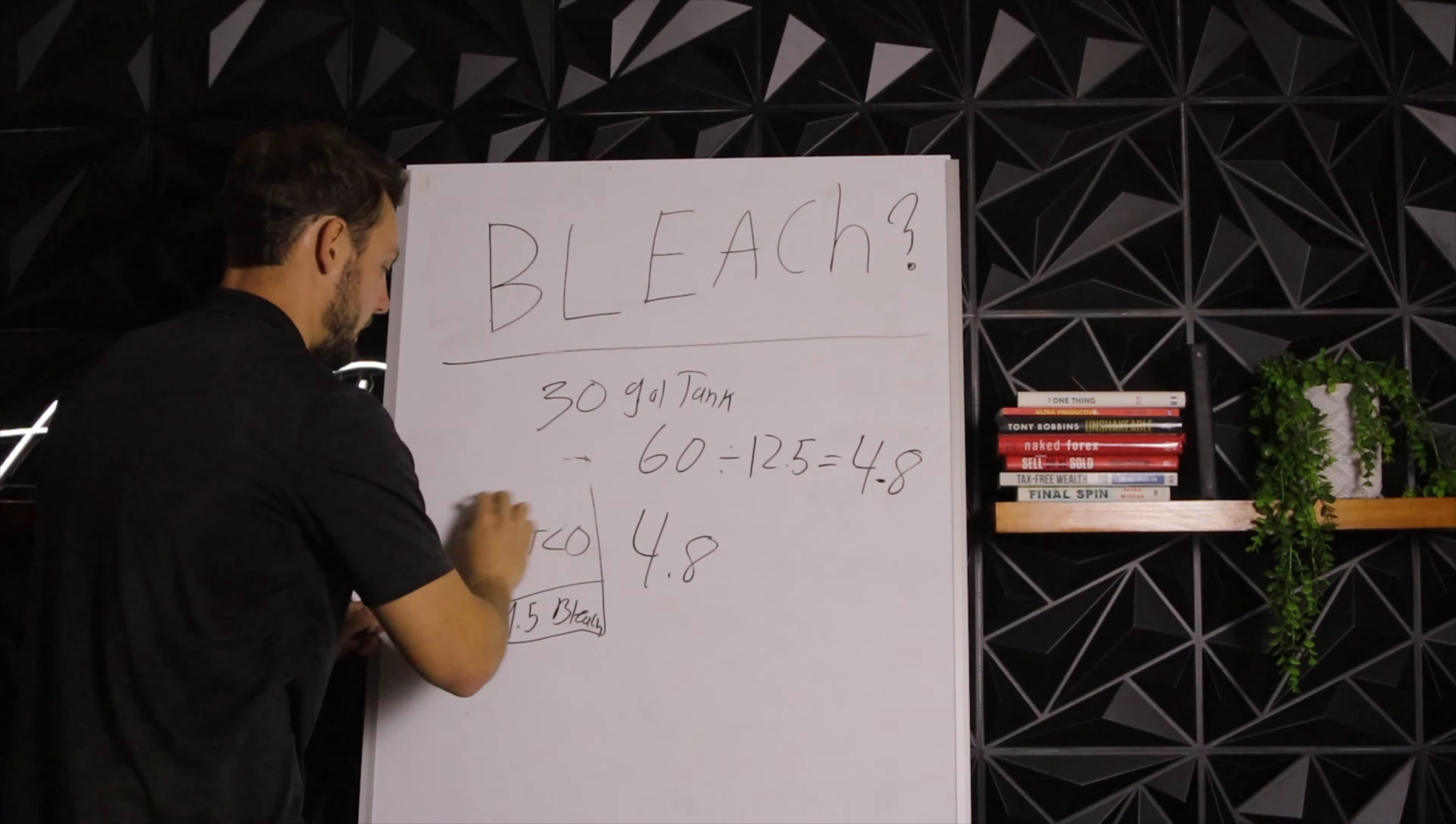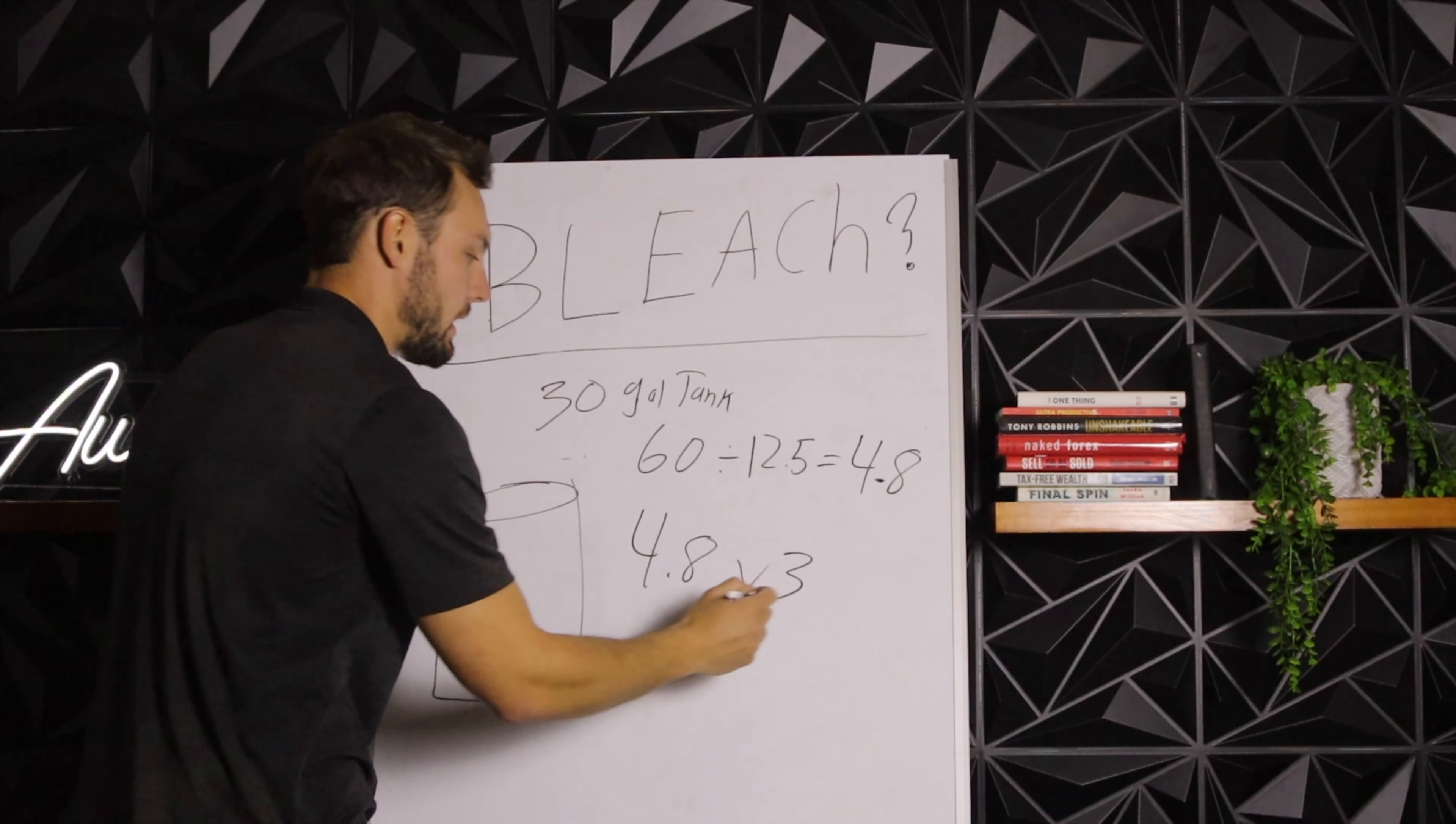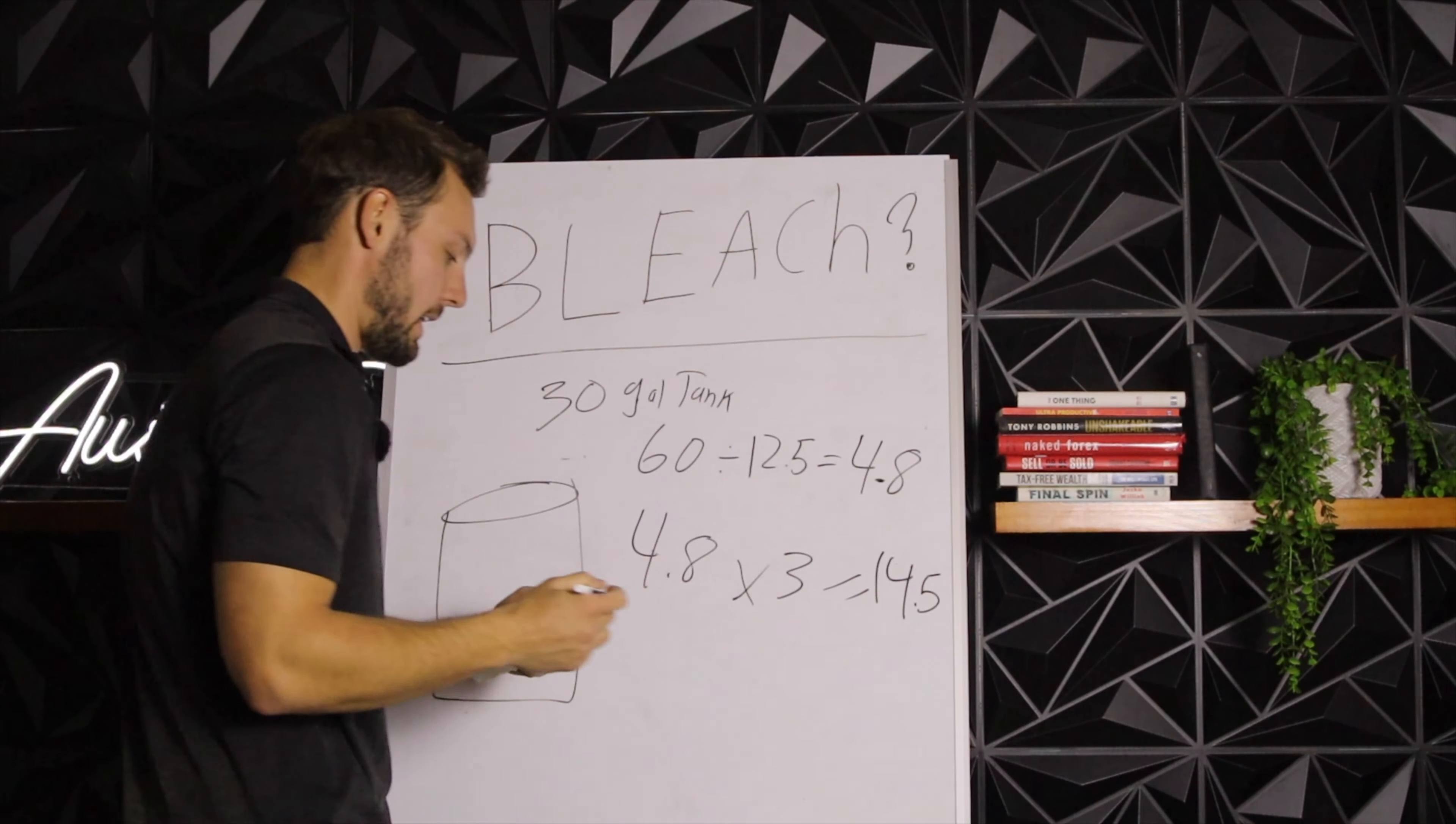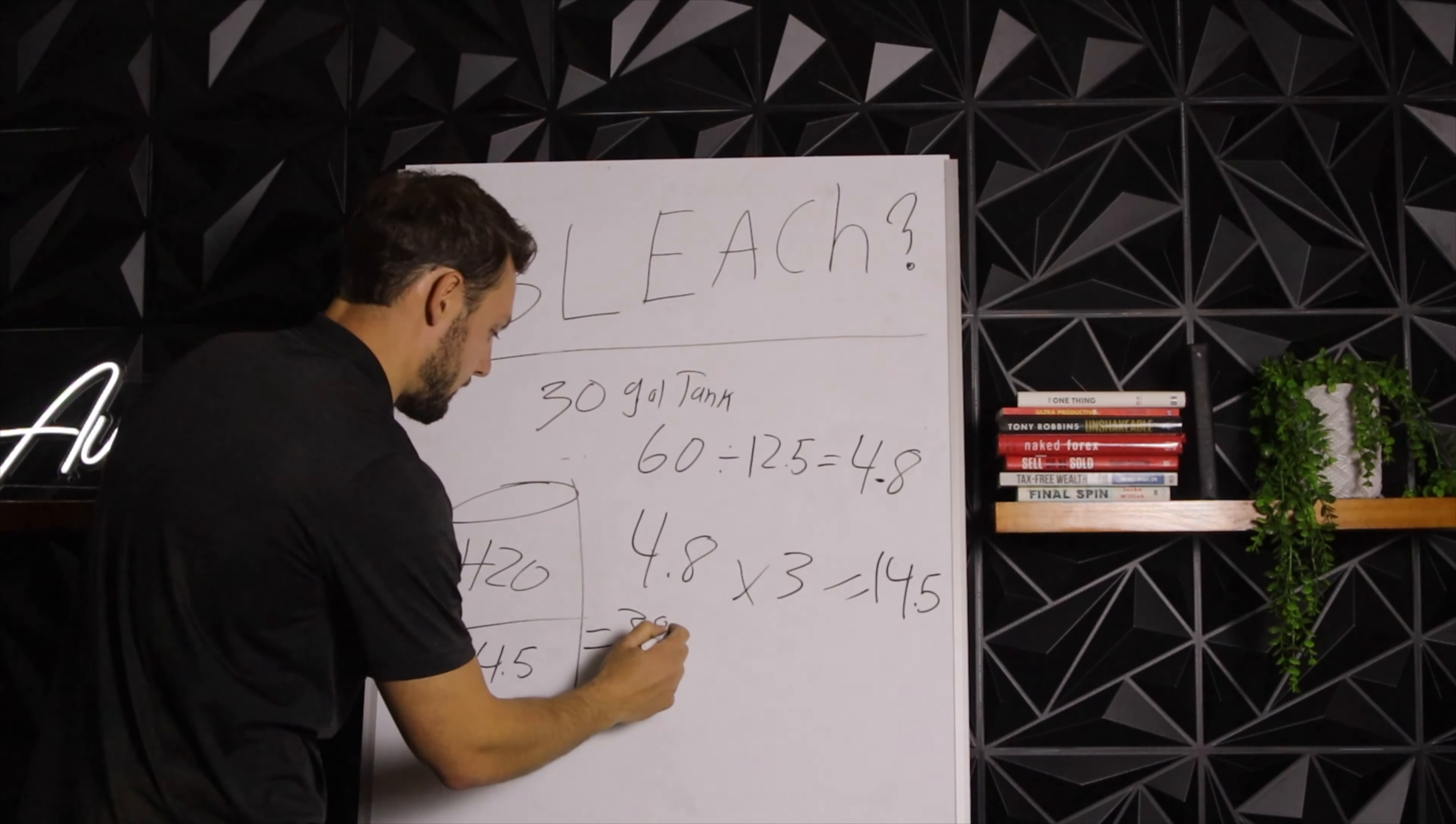We're going to take 4.8, let's get a new tank here. Let's say we want a 3% mix. Maybe we're post-treating a driveway, pre-treating a driveway. 3% is a perfect post treatment. We're looking for a 3% mix. 4.8 times 3, 14.4, otherwise 14.5. 14.5 gallons. 14.5 bleach, the rest H2O. There's our 3% mix.